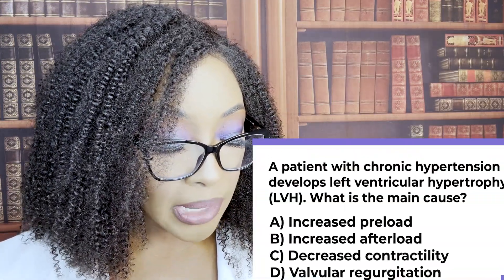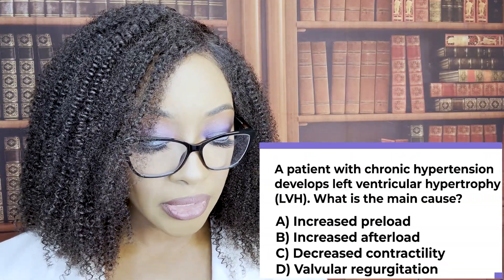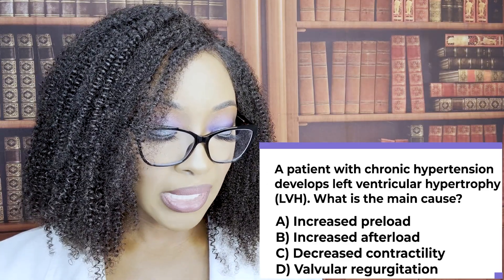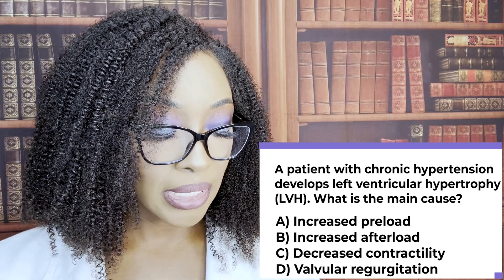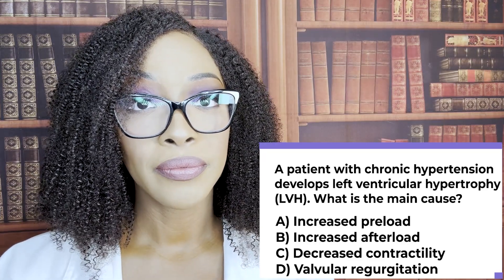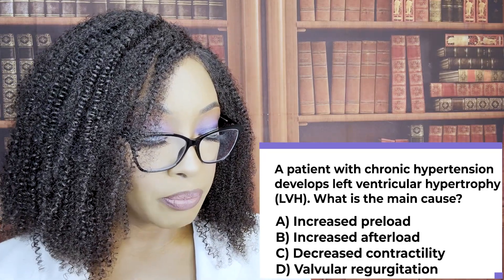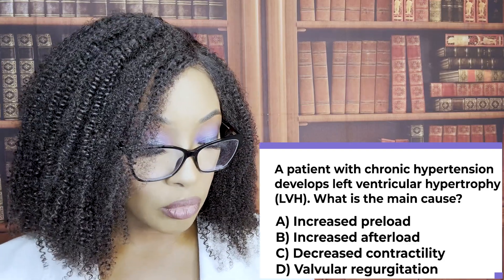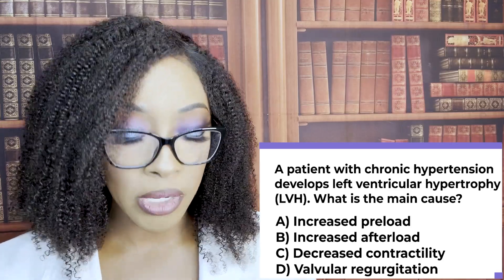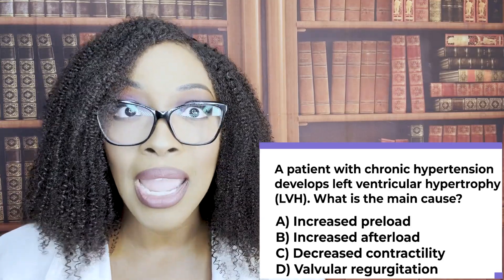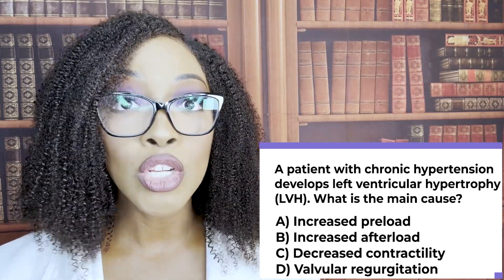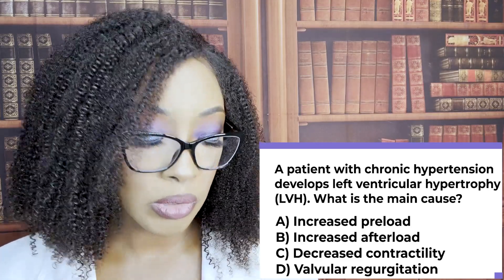A patient with chronic hypertension develops left ventricular hypertrophy. What is the main cause? A, increased preload; B, increased afterload; C, decreased contractility; or D, valvular regurgitation? The correct answer is B, increased afterload. Chronic hypertension increases the afterload, which forces the left ventricle to work harder, leading to hypertrophy. Make sure you understand the pathophysiology and why.